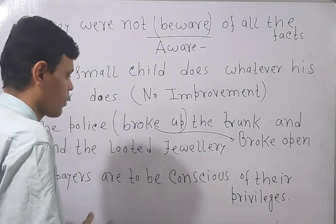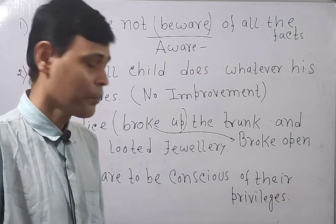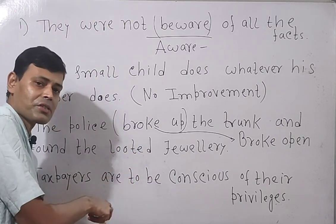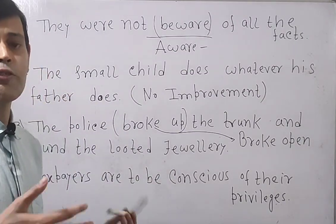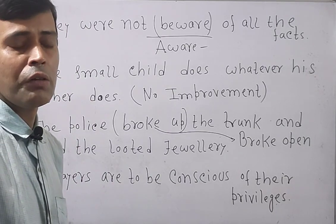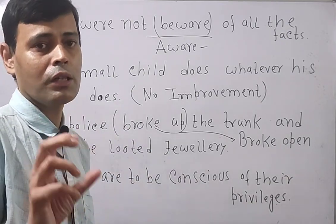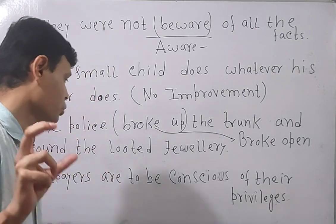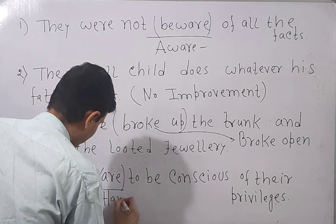Next sentence: 'Taxpayers are to be conscious of their privileges.' Privileges mean special advantages. 'Are to be' means it is a settled case. This portion can be changed. We can write 'should be conscious' or 'have to be conscious.' If you find both options, it is better to select 'have to be' as the first preference, and 'should be' as the second. So instead of 'are to be,' it should be 'have to be.'